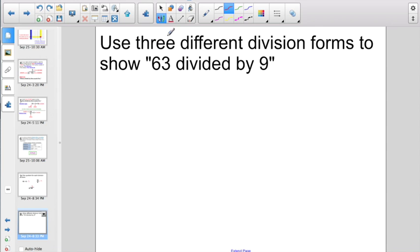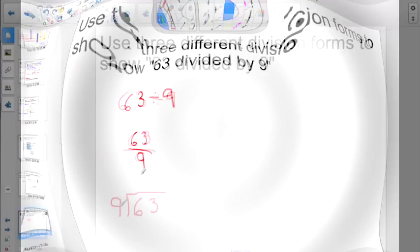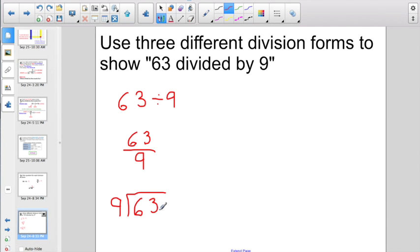Here, it's asking us to use three different division forms to show 63 divided by 9. In no particular order, I'm going to start off just using my division symbol. Here, I have 63 divided by 9. Now, I need two other ways. My second way, I can use the division bar. 63 divided by 9. And, for my third and last way, 63 divided by 9 using a division box. 63, the dividend, goes inside the box. The divisor of 9 goes outside the box.